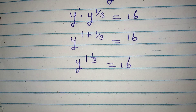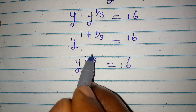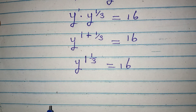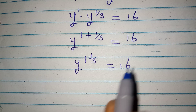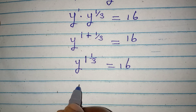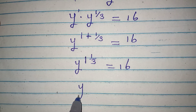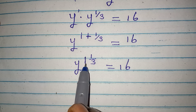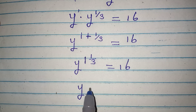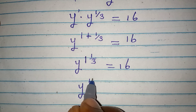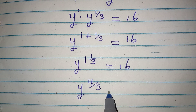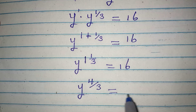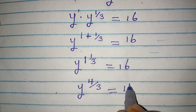Now this power — let's write it as an improper fraction. So we are going to have y to the power of 3 times 1 is 3, plus 1, that would be 4, over 3, which would be equal to 16.